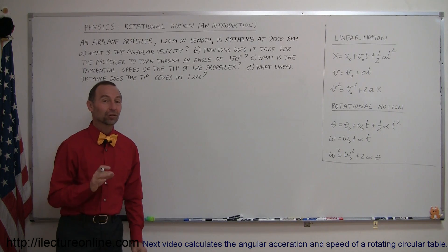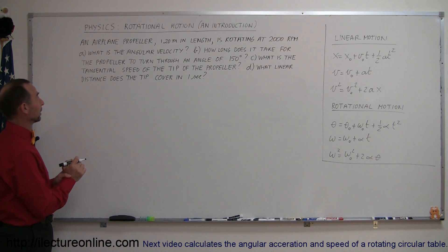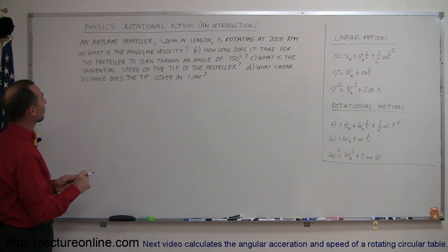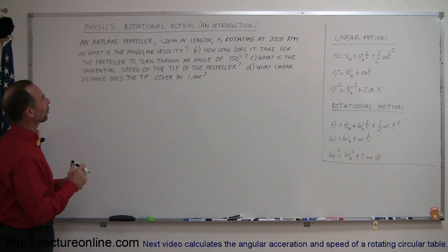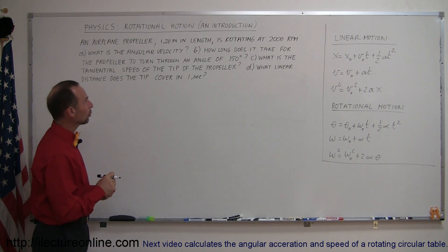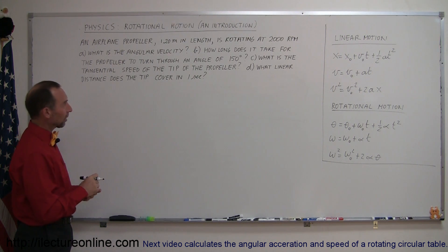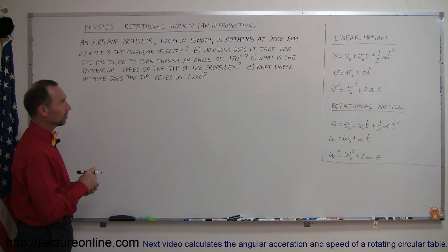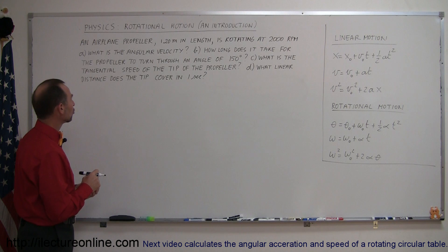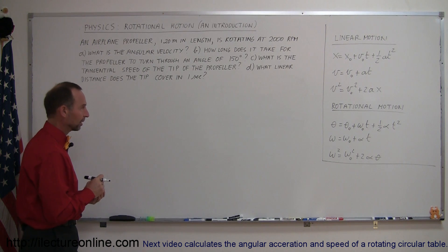Welcome to iLectra Online. Here's a good example to help us understand rotational motion. An airplane propeller 1.2 meters in length is rotating at 2,000 RPMs. What is the angular velocity? How long does it take for the propeller to turn through an angle of 150 degrees? What is the tangential speed of the tip of the propeller, and what linear distance does this tip cover in one second?